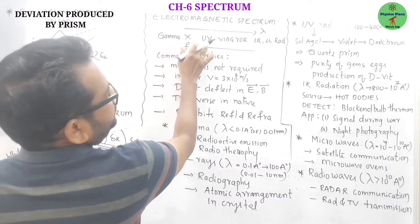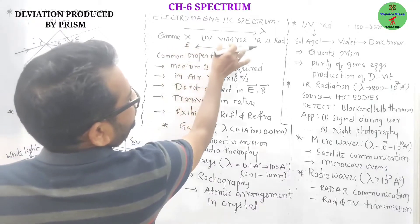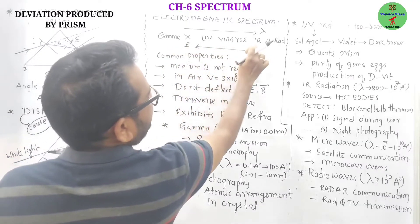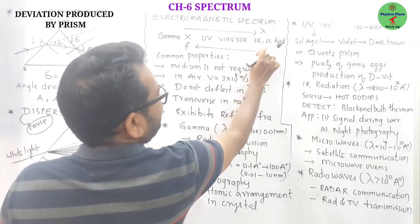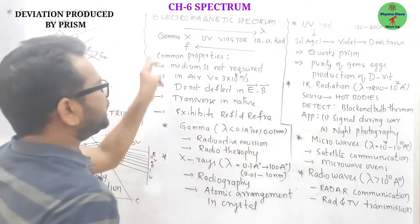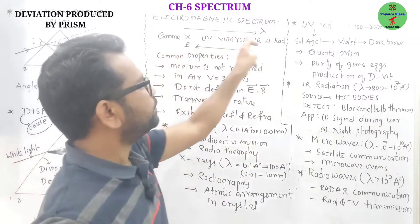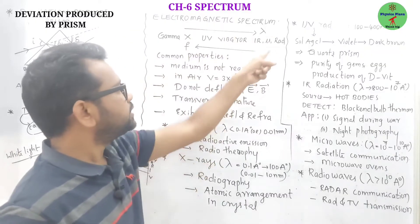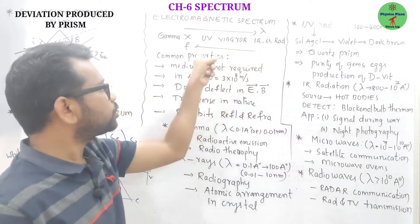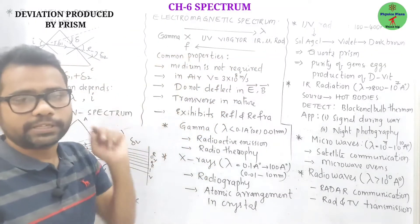Till date, we have: gamma, X-rays, UV, VIBGYOR, infrared, micro, and radio waves. This is in increasing order of wavelengths, and this is in increasing order of frequencies.